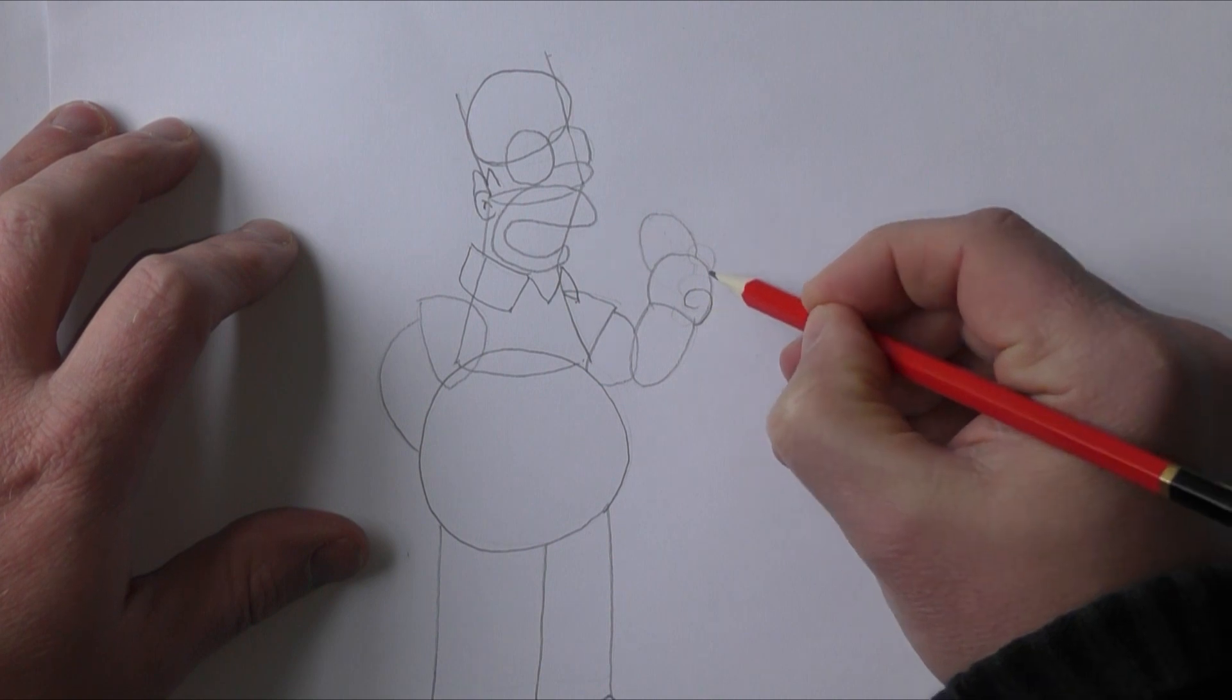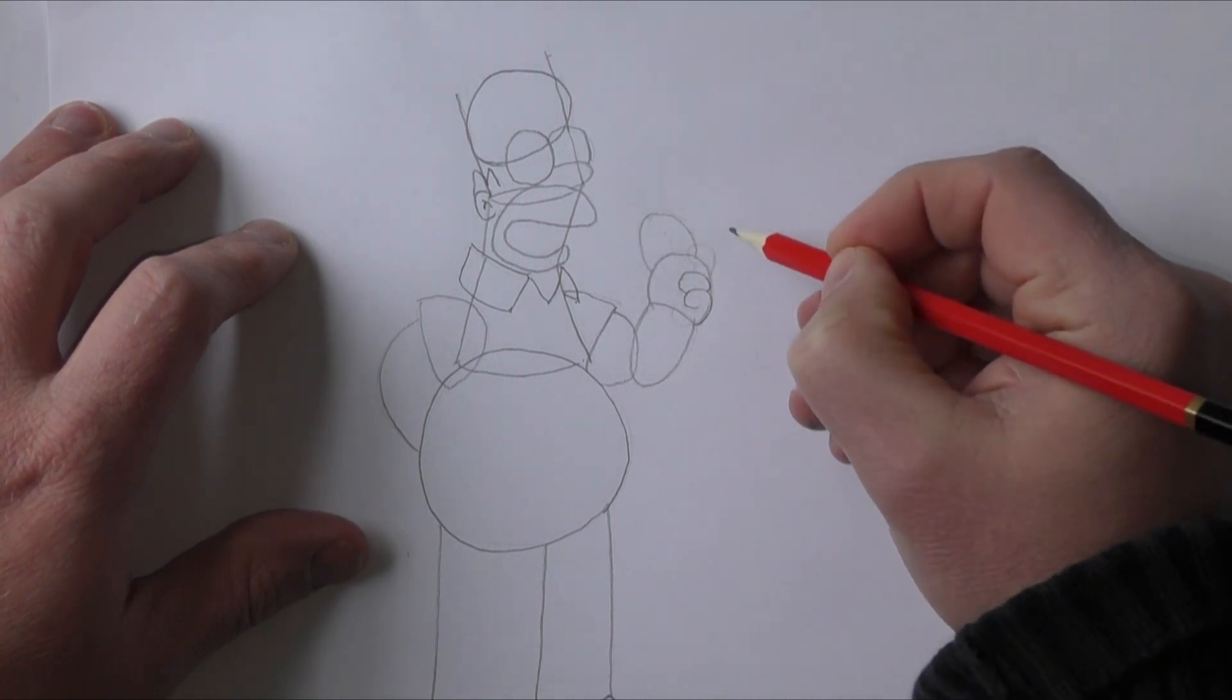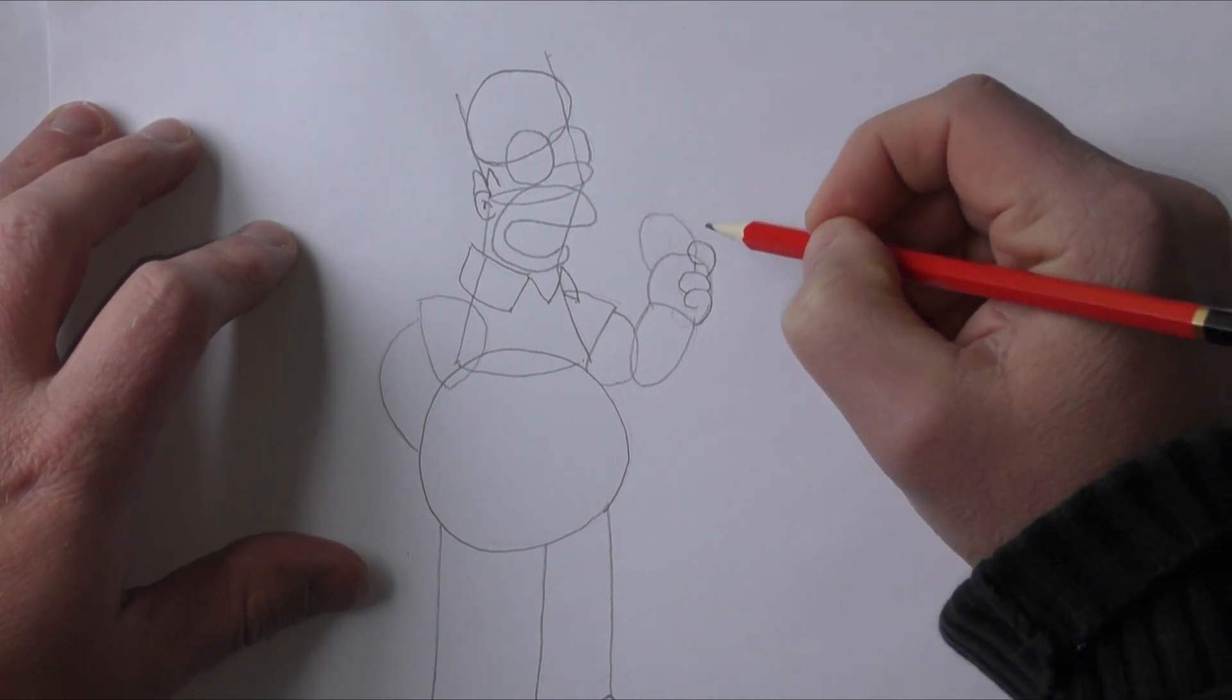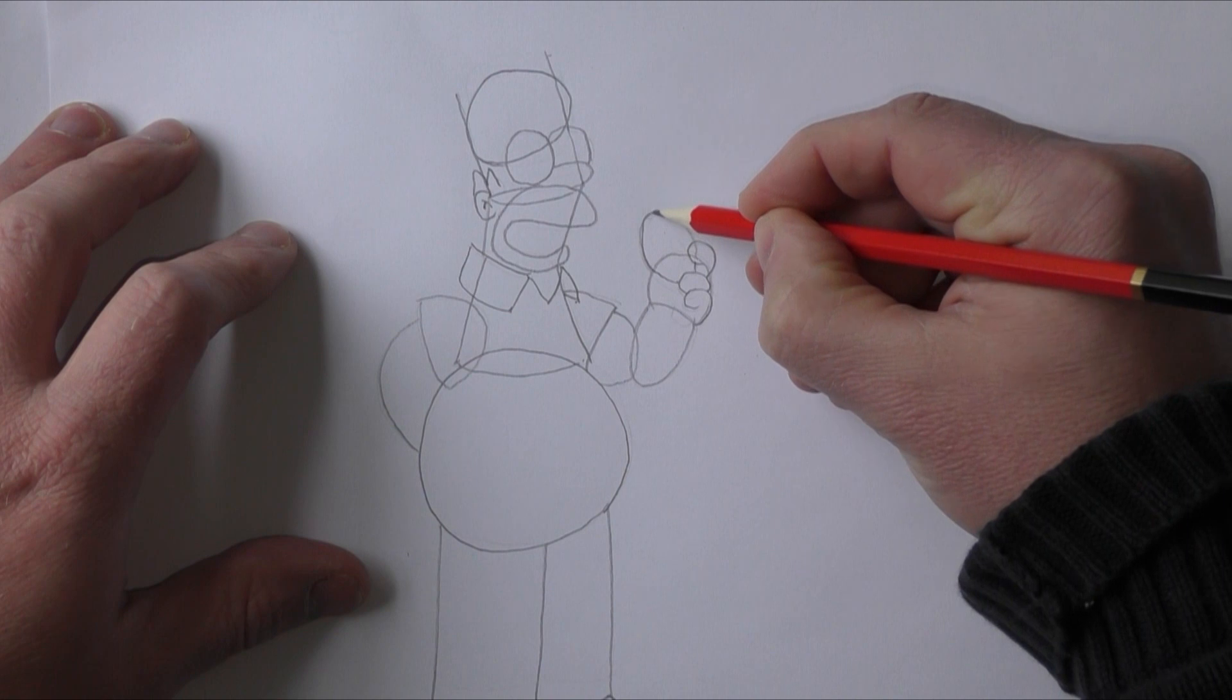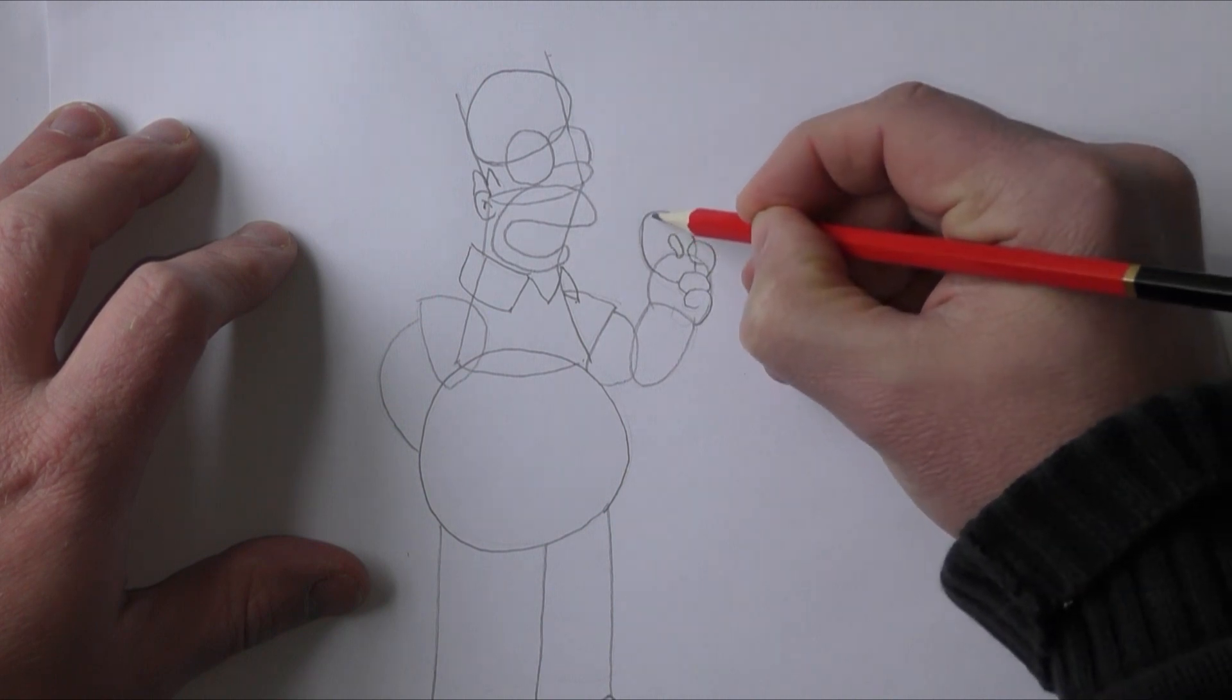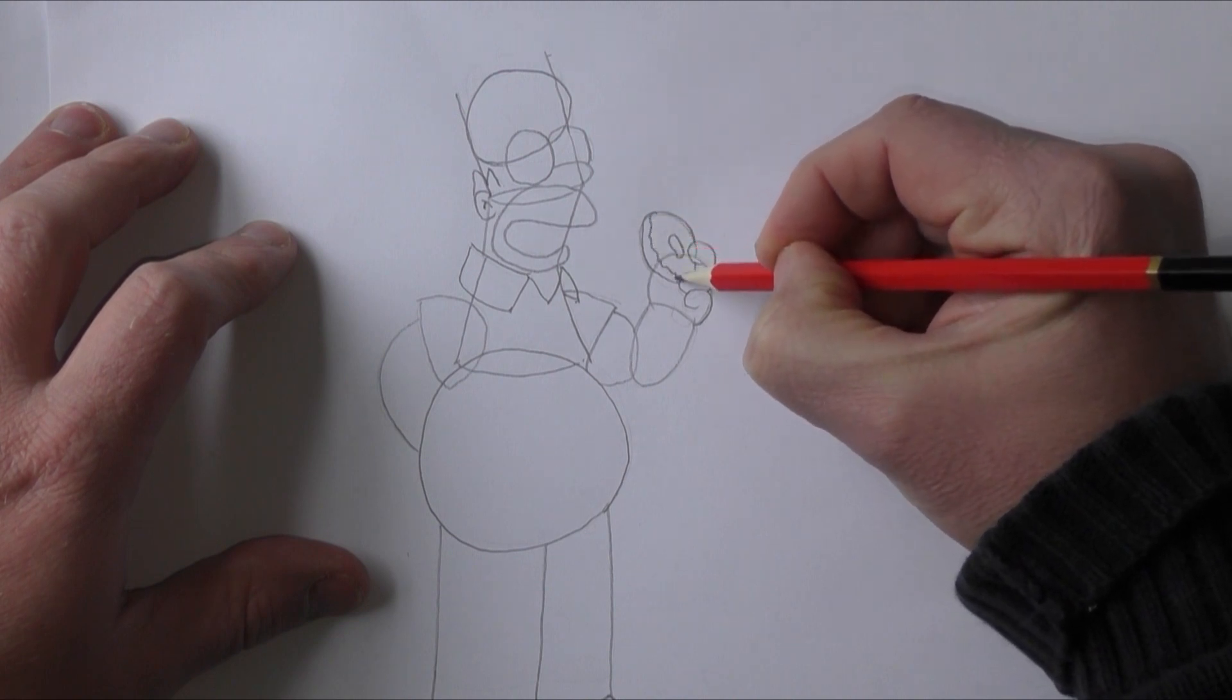I can draw Homer's fingers on now for holding his donut, a nice firm grip there. And we'll start to fill in the donut a bit as well now, just in a bit more detail. There's the outside of the donut and the inside, a bit of a wiggly line for the icing on top of that.